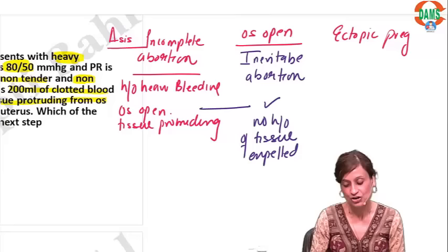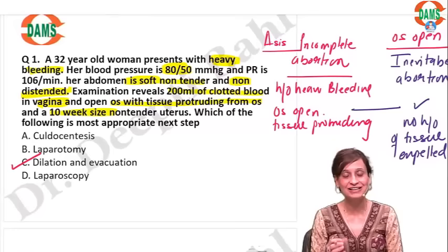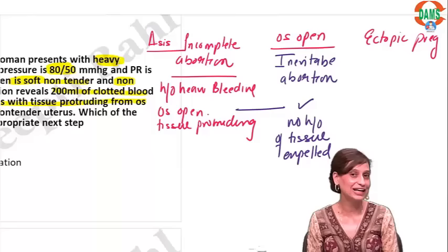Why is this not inevitable abortion? In inevitable abortion the os will be open, but there is no history of tissue being expelled. So for inevitable — no history of expulsion of products. We are very clearly seeing tissue coming from the os, which means there is history of expulsion of products. So it cannot be inevitable abortion.